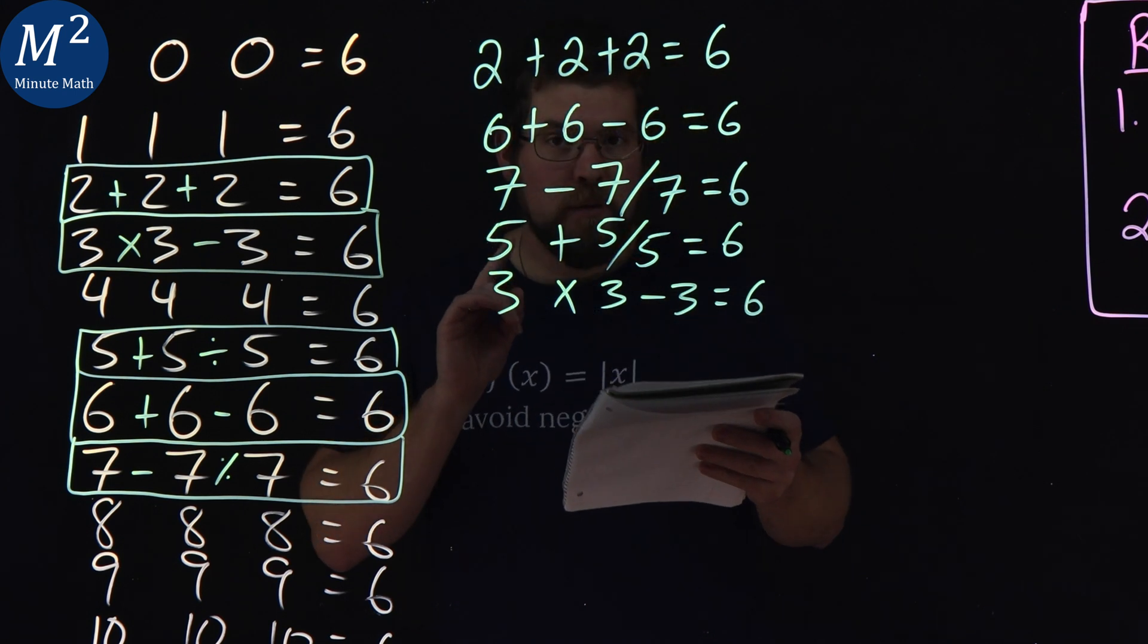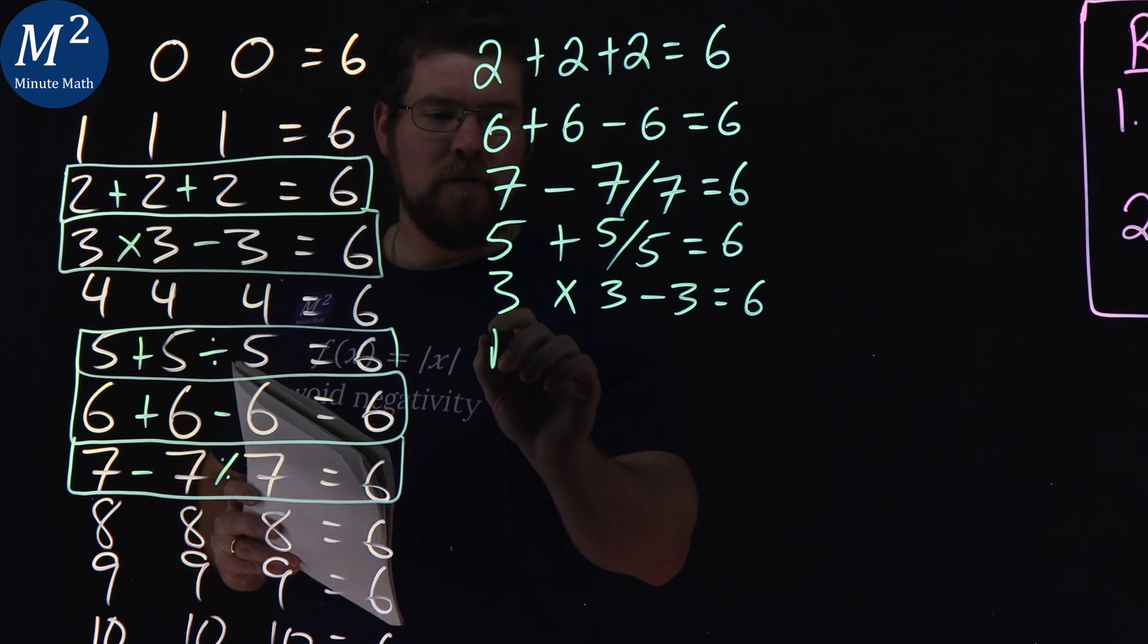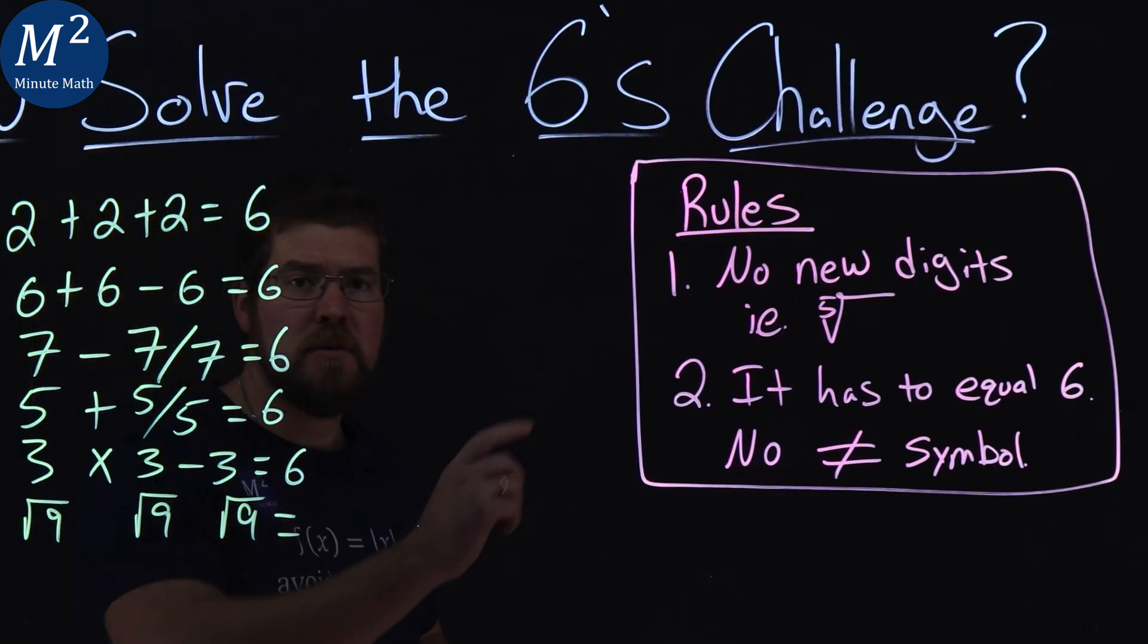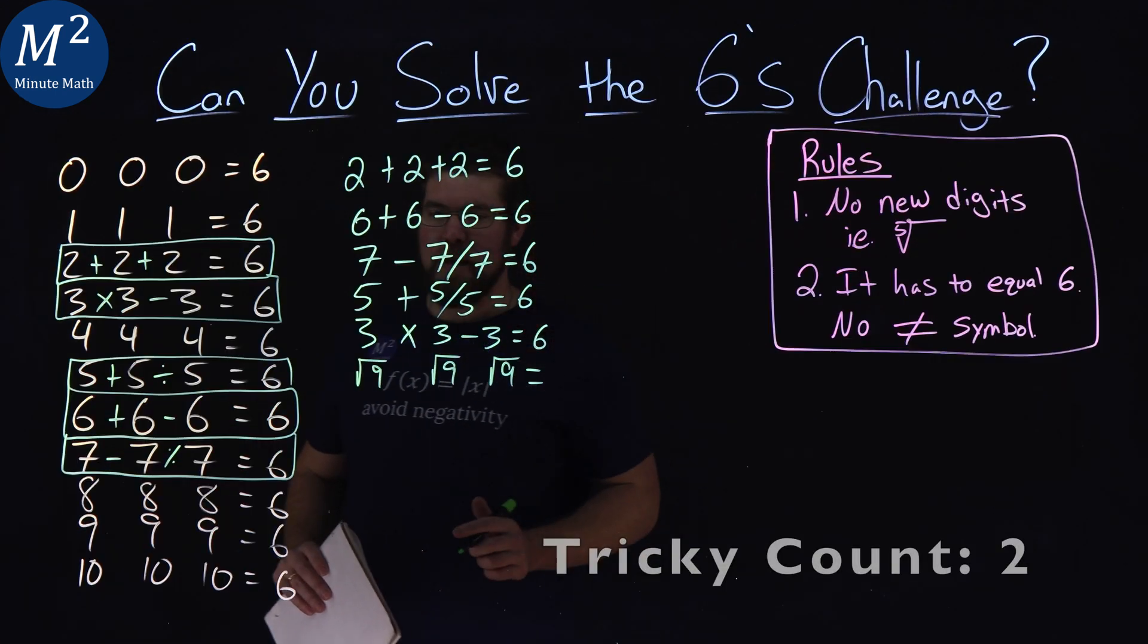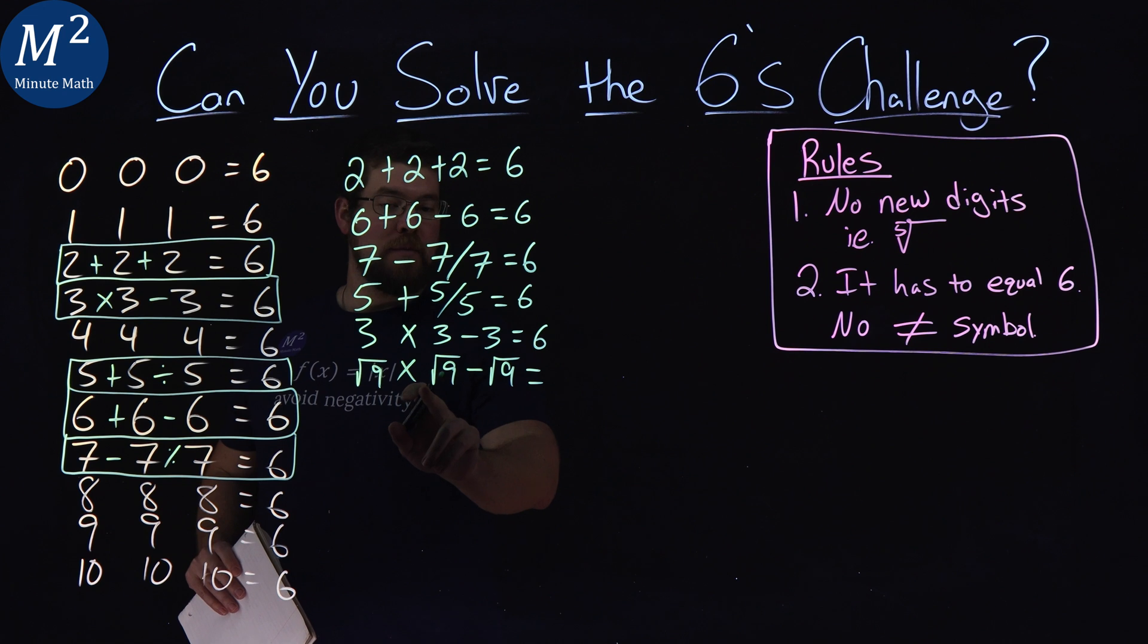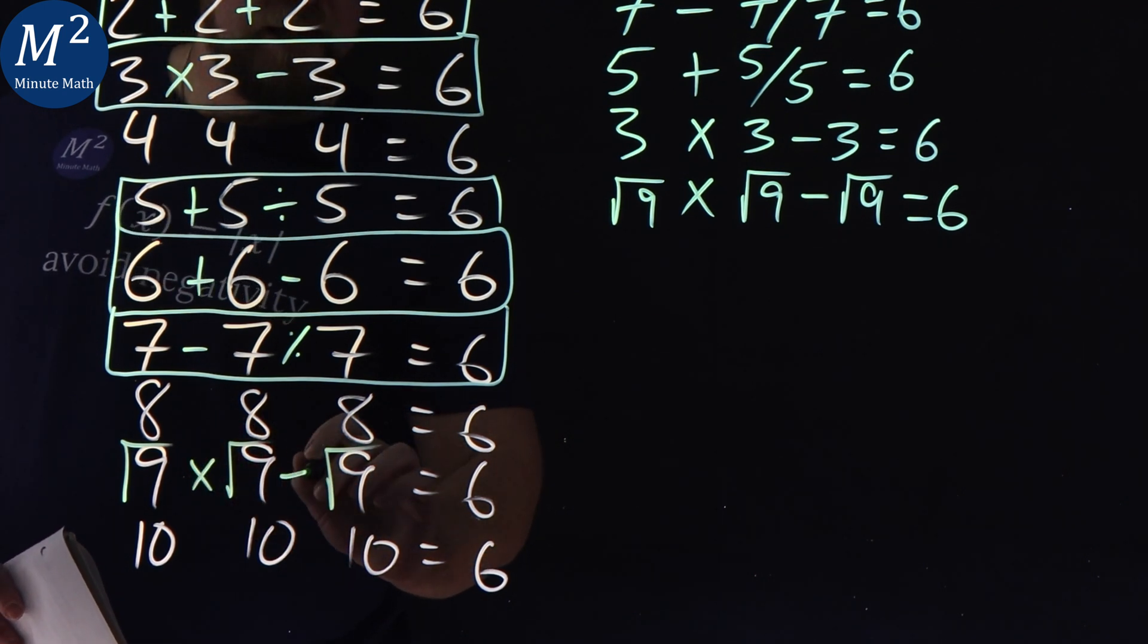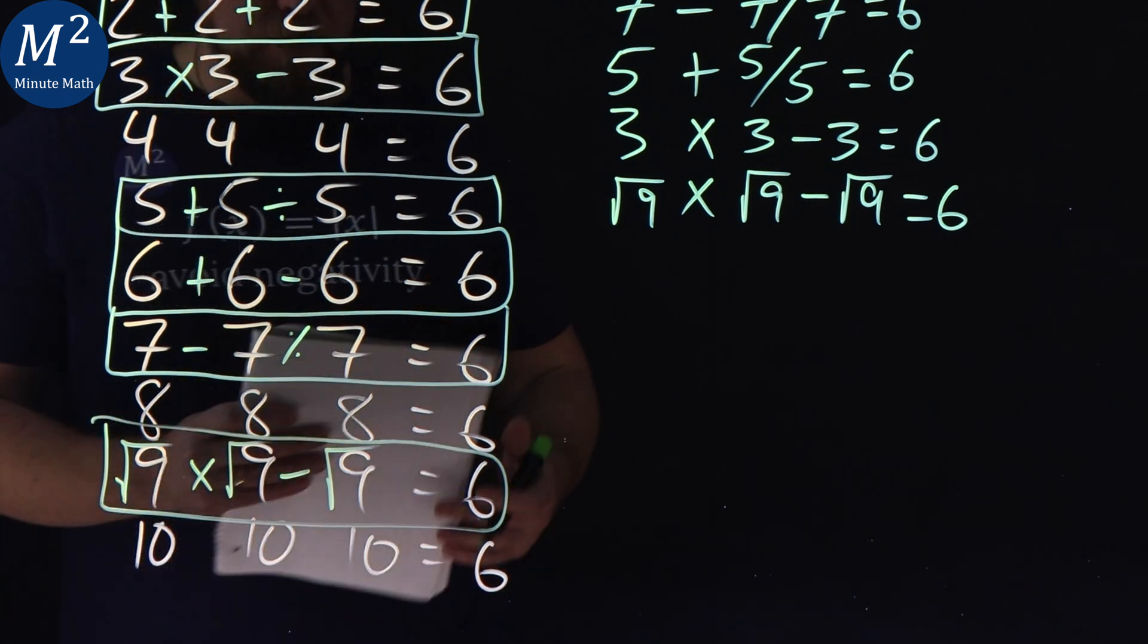In a similar way to the threes, we have the nines. Watch this. Square root of nine is three. Square root of nine is also three, and square root of nine is also three. And I know you're thinking, well, you said you can't do the fifth root. Yes, because the number five is written there, but it's given as a symbol, the square root. Tricky. Same operators here. Times multiply. Square root of nine is three, right? Times three minus three is the six. So right here we have the square root for the nine, square root, square root, and we have a multiplication and a subtraction.